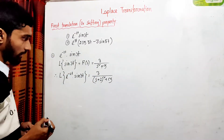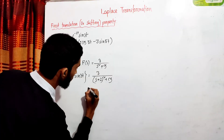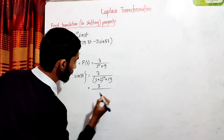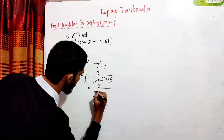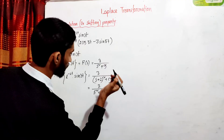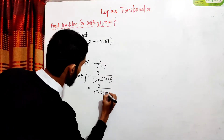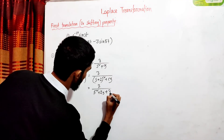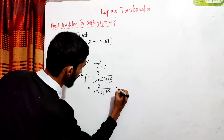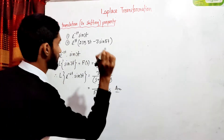Expanding the denominator: (s plus 2) squared is s squared plus 4s plus 4, so the answer becomes 3 divided by (s squared plus 4s plus 4 plus 9), which equals 3 over (s squared plus 4s plus 13).